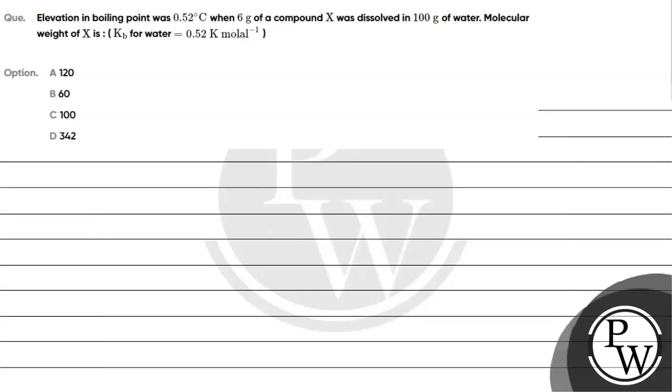Hello Bacho, let's read this question. The question says elevation in boiling point was 0.52 degree Celsius when 6 grams of a compound X was dissolved in 100 grams of water.